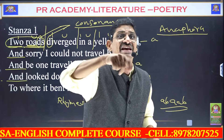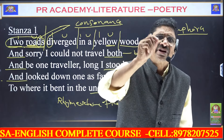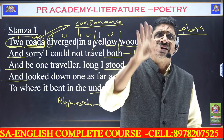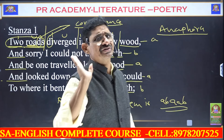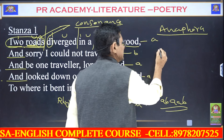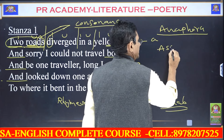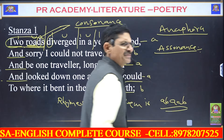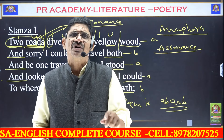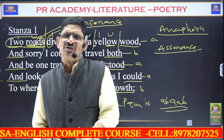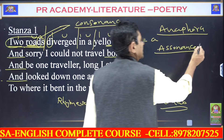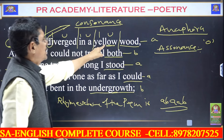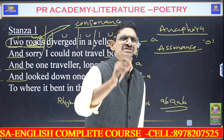Assonance is the repetition of the same vowel sound in one or more words. For example, the 'o' sound in 'road,' 'low,' and 'yellow' — the same vowel sound is repeated in these words, making it assonance.